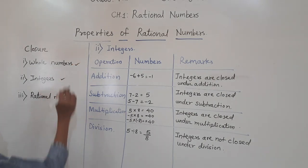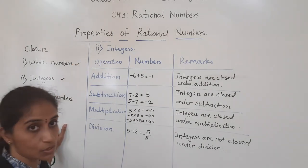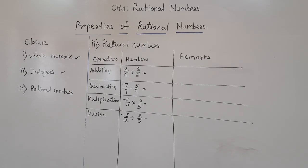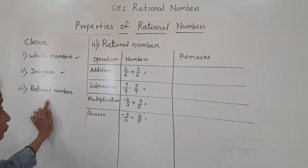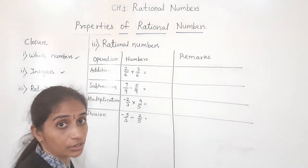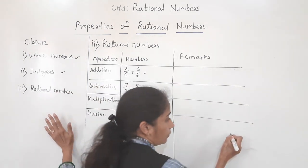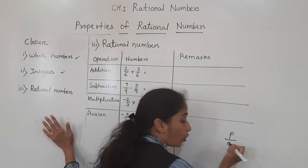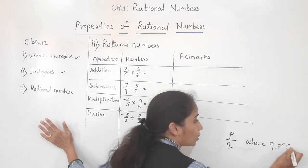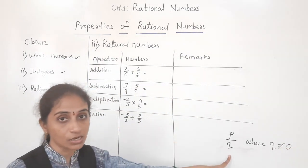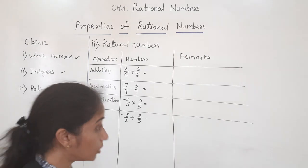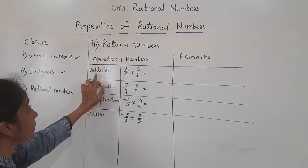We have done whole numbers and integers. Now we will move towards the properties of rational numbers and see the closure property for rational numbers. Rational numbers are written in the form of P upon Q where Q is not equal to zero — the denominator should not be zero.